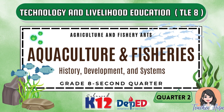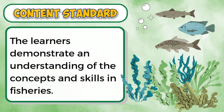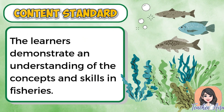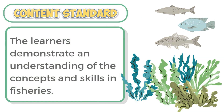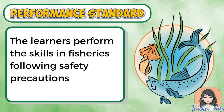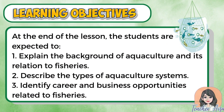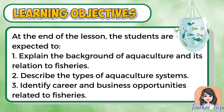For the content standard, the learners demonstrate an understanding of the concepts and skills in fisheries. For the performance standard, the learners perform the skills in fisheries following safety precautions. For the learning objectives, at the end of the lesson the students are expected to: one, explain the background of aquaculture and its relation to fisheries; two, describe the types of aquaculture systems; three, identify career and business opportunities related to fisheries.